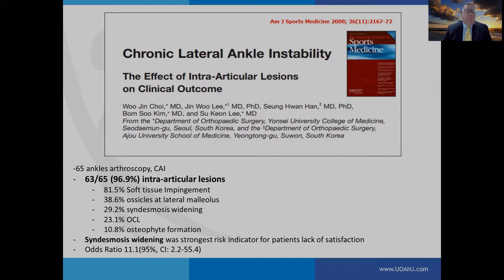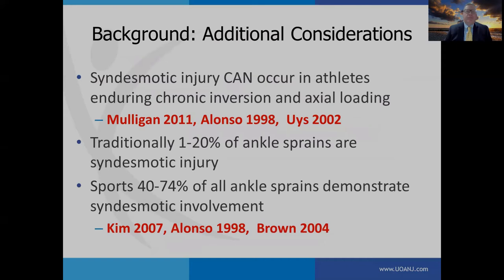Troy also did a paper looking at individuals undergoing lateral ligament reconstruction who had an arthroscopy prior to the procedure, finding 97% had intraarticular lesions. Syndesmosis widening was the strongest risk indicator for patient dissatisfaction following surgery. Syndesmotic injury can occur with chronic inversion injuries and axial loading. Traditionally, high ankle sprains are thought to occur in 1% to 20% of ankle sprains; however, in sports, 40% to 70% of all ankle sprains can demonstrate syndesmotic involvement.